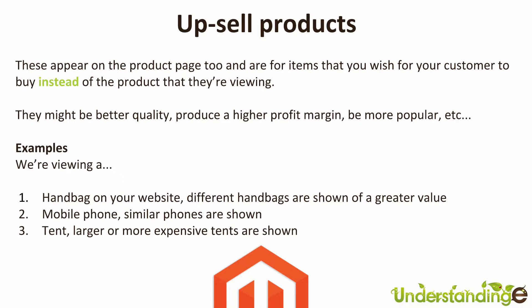For example with a mobile phone, you may show the iPhone 5 and then decide to show an iPhone 6, an iPhone 6 Plus, or a Google Nexus instead. Well, the Google Nexus might not be a higher basket spend, but you get the idea.